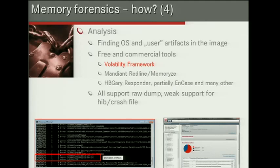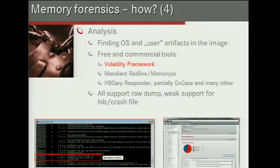Memory analysis is the process of reading the memory dump and identifying OS artifacts. My personal choice is Volatility — a very powerful, actively developed tool with lots of plugins and a vibrant community. Other tools include Memorize, Mandiant Redline, HBGary Responder, and NCASE plugins. Regarding formats, all tools support raw dumps, so if you want to analyze with multiple tools, use raw dumps or convert to raw. Tools currently have weak support for crash dumps, so use raw dumps for portability.